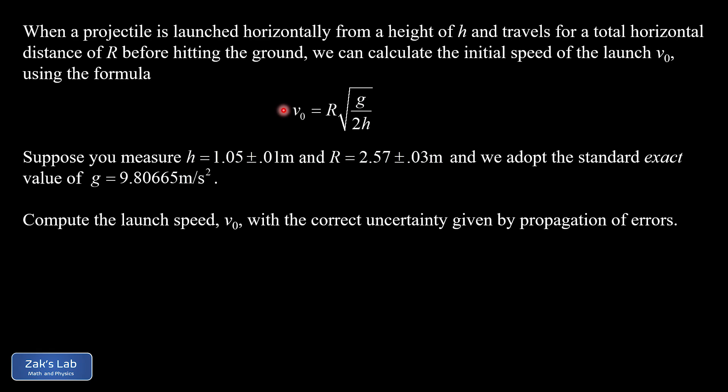In this video, we're applying propagation of error to a formula that was derived in a projectile motion problem. The setup for the problem was a projectile launched horizontally from an initial height of h. It's observed to have a horizontal range of R before the projectile hits the ground.